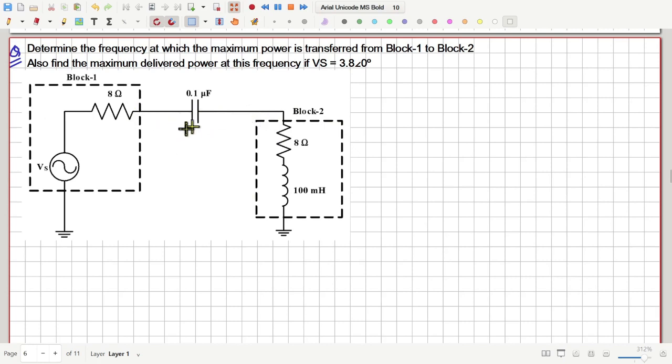Now, how much power is transferred from block 1 to block 2? Notice that whatever power goes out from block 1 that must be consumed by this resistor in block 2 because the inductor and the capacitor cannot consume any power on an average.